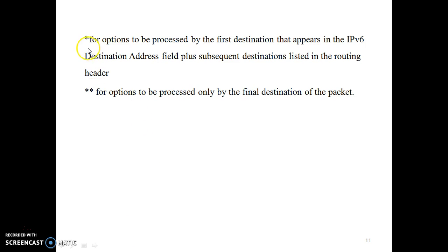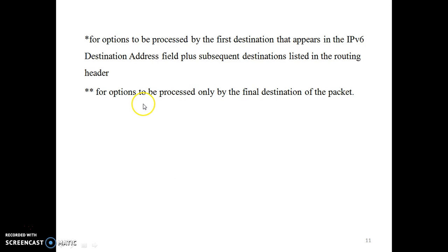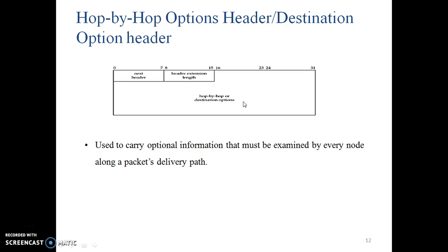The single asterisk on the first destination option header indicates these are options to be processed by the first destination that appears in the IPv6 destination address field. The double asterisk on the second destination option header means it is processed only by the final destination of the packet.